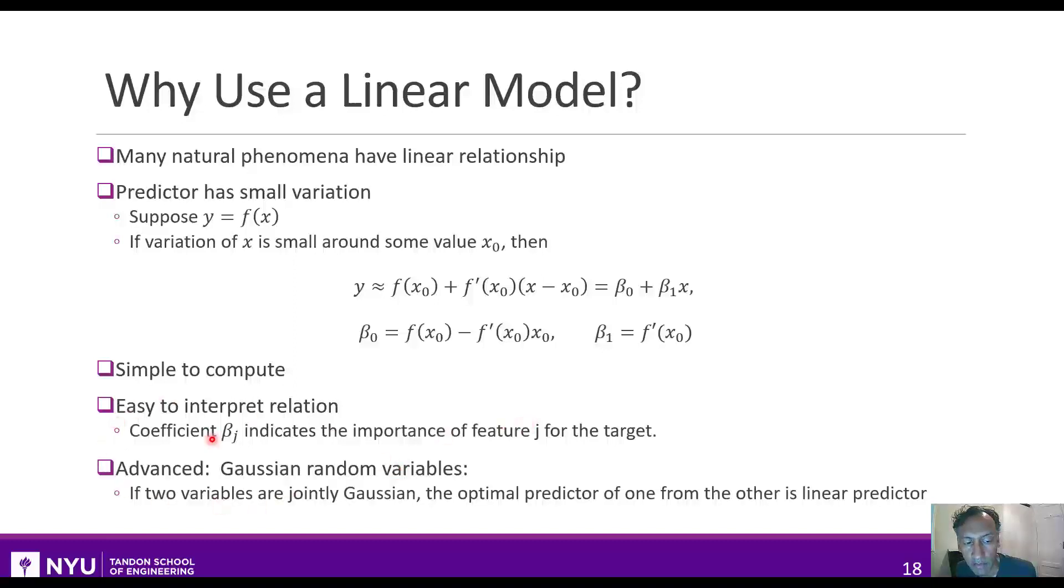If you've taken the probability class, there's another more advanced reason. If you don't know this, it's absolutely no problem. But if you recall that if x and y are jointly Gaussian random variables, then the optimal predictor of one from the other is a linear predictor.